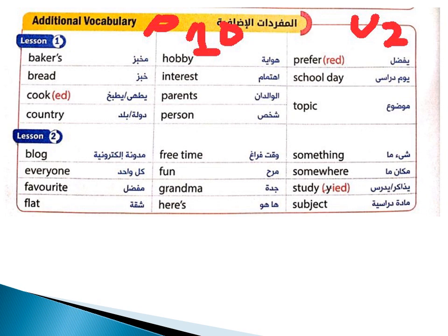سامثينج - شيء أمه. سامووير - مكان أمه. ستادي - يزاكر. سابجيكت - مادة دراسية، وتيجي موضوع توبيك.